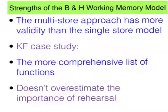The KF case study supports the model: KF suffered head trauma as a result of a motorcycle accident, which damaged the parts of the brain responsible for short-term memory. There was a diminished performance in his verbal memory, but his visual and spatial memory was largely unaffected. Thirdly, the working memory model provided a more comprehensive list of functions such as reading, the ability to navigate, and perform mental arithmetic. And unlike the Atkinson-Shiffrin model, it didn't overestimate the importance of rehearsal in consolidating information from STM to long-term memory.